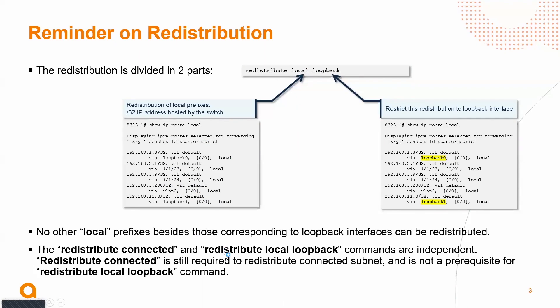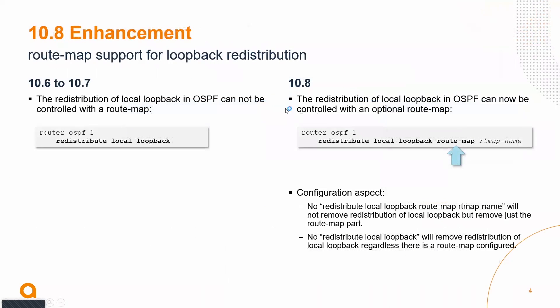Pay attention that redistribute connected is different from redistribute local loopback — those commands are independent. Do not expect a loopback to be redistributed when you use redistribute connected; we already covered that in the TOI for 10.6. The enhancement in 10.8 adds route-map support, because we want the ability to control that redistribution and specifically to control the IP space and the range of IP addresses that must be redistributed.